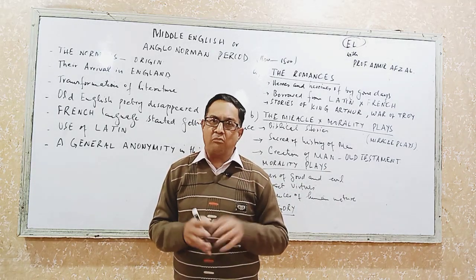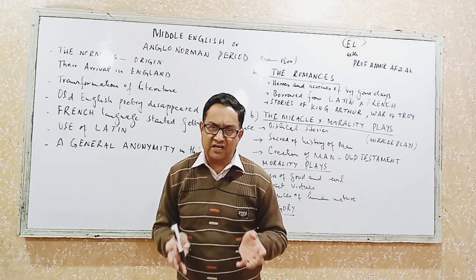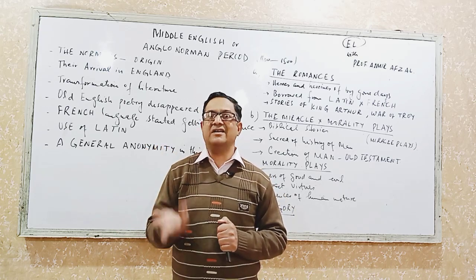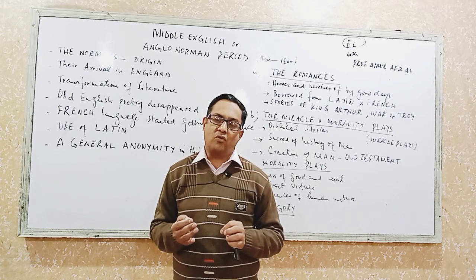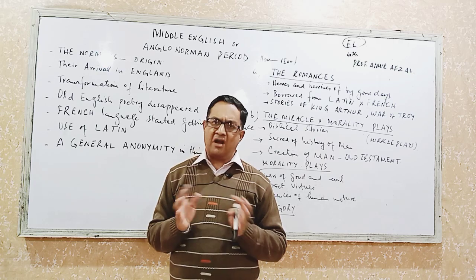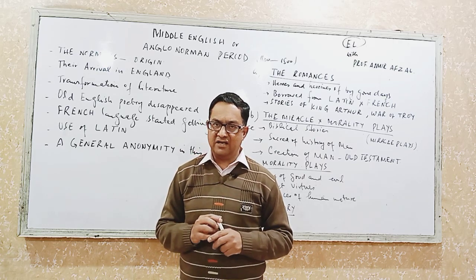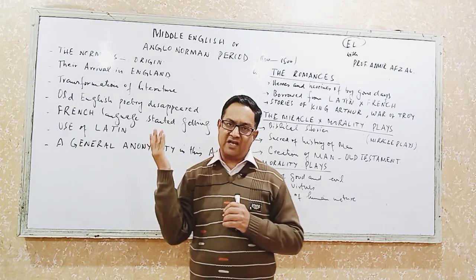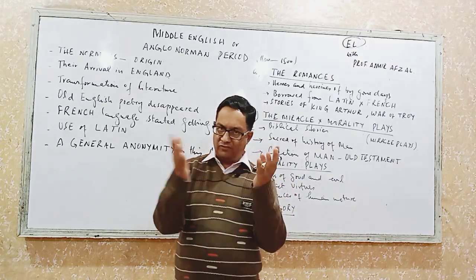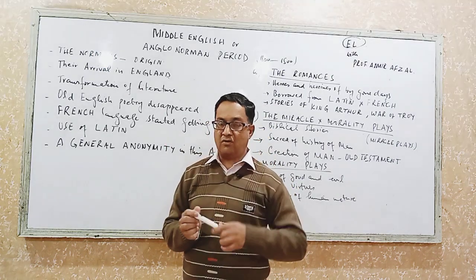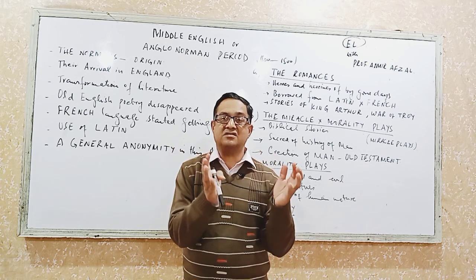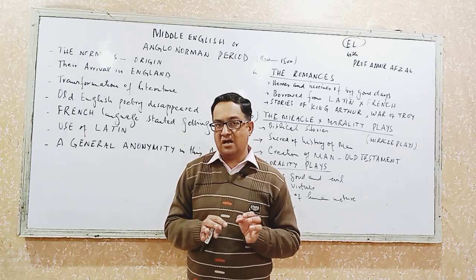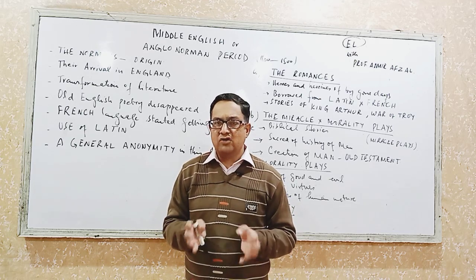If you consult books from this period, you will generally notice anonymity — you will find poetry but mostly without names. This anonymous writing is because of poor record-keeping during that era, so it is difficult to identify who wrote particular works.